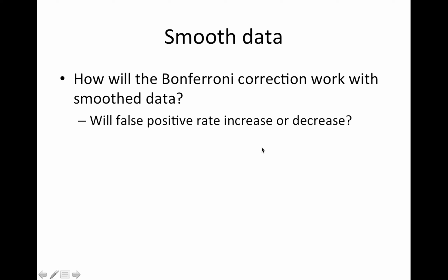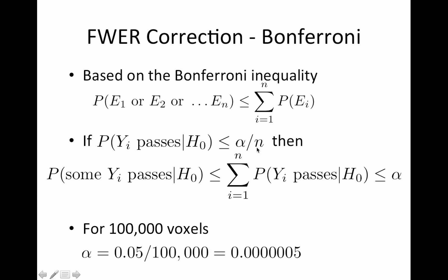We'll come back to this for the exciting conclusion. So what do you guys think is going to happen with the smooth data? Will the Bonferroni correction be conservative? Will my false positive rates be too high or will the false positive rate be too low? Is it going to be less than 0.05 or greater than 0.05? Go back to this inequality and think about it. So this is less than or equal to. This is the truth. This is what we're using in place of the truth.